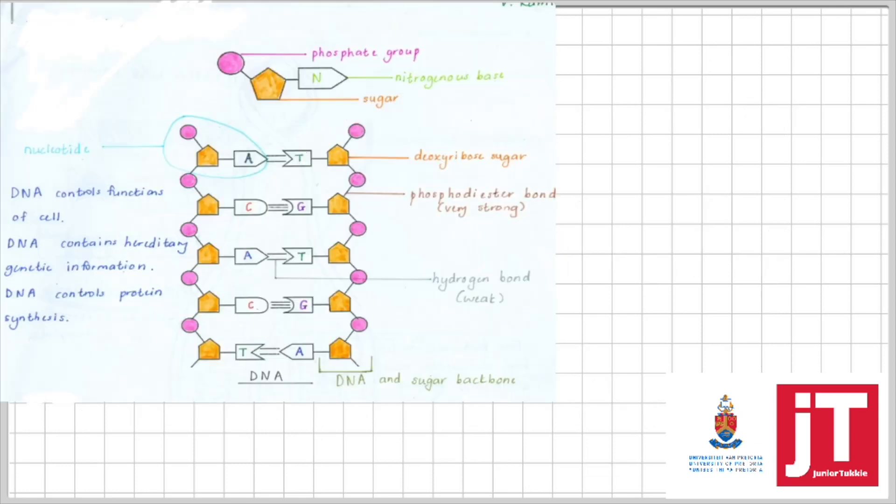We start off with DNA — DNA stands for deoxyribose nucleic acid. We know that DNA is found in the mitochondria or the nucleus. In a plant, it's also found in the chloroplast. The monomer or building block of a nucleic acid or DNA is a nucleotide.